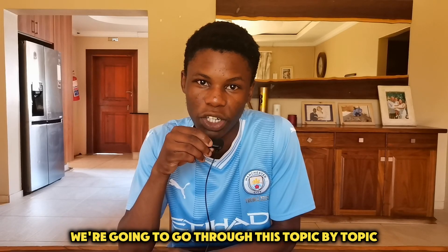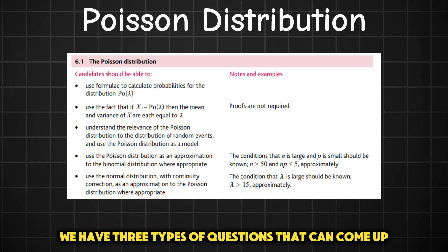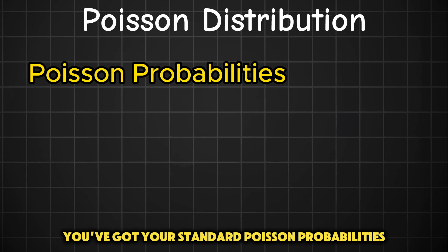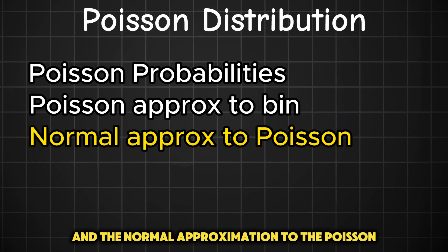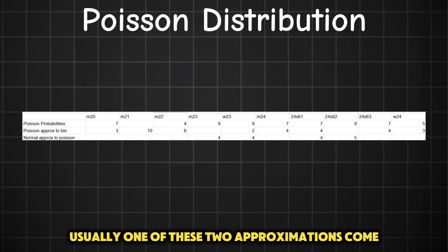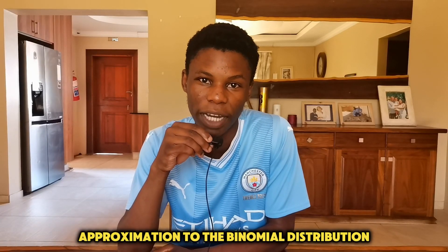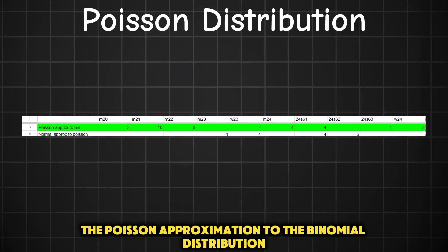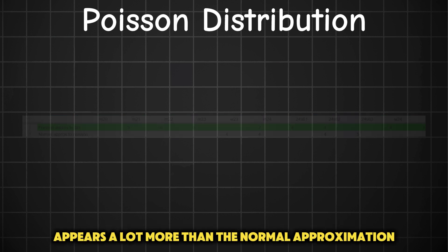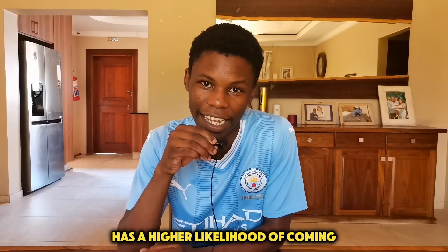We're going to go through this topic by topic and try to predict what types of questions will come. Starting off with the Poisson distribution — there are three types of questions that can come up: standard Poisson probabilities, the Poisson approximation to the binomial distribution, and the normal approximation to the Poisson distribution. Usually one of the two approximations comes together with the Poisson probabilities question. The Poisson approximation to the binomial distribution appears more frequently, so prepare for both but that one has a higher likelihood of coming.